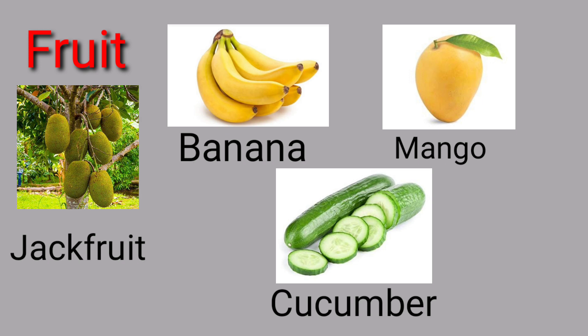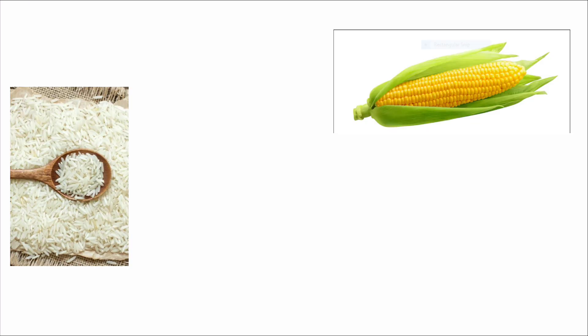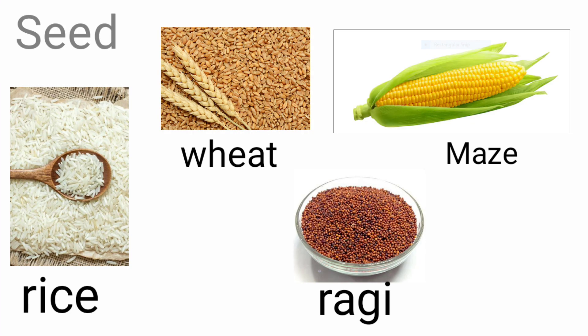Next, mango, jackfruit, banana, cucumber — we use the fruit as the edible part. We use wheat, rice, and maize — we use the seed as the edible part.